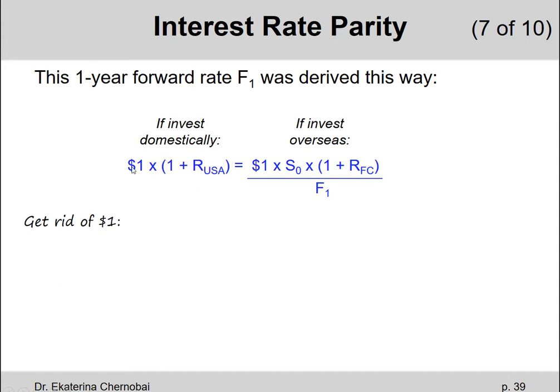Let's simplify it by getting rid of $1 on the left-hand side and on the right-hand side. So we have 1 plus RUSA equals S0 times 1 plus the foreign country rate and then the whole thing on the right-hand side divided by the one year forward rate, F1.